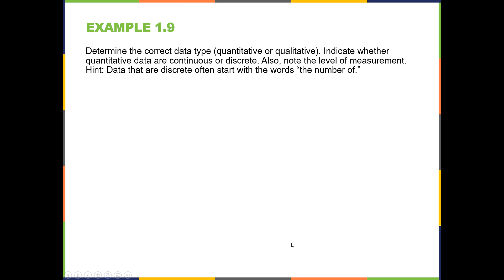Now we can try several examples to see if we can apply the knowledge we've learned from the past few lessons, including this one. Determine the correct type of data — quantitative or qualitative — and indicate whether data are continuous or discrete if they're quantitative. Also note the level of measurement. Hint: data that are discrete often start with the words 'the number of,' because discrete data are from a counting process.